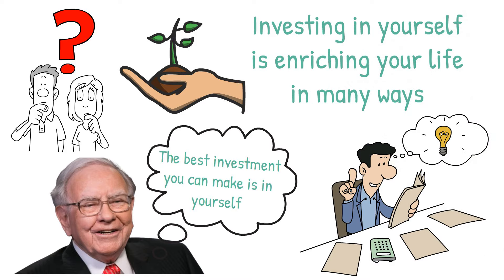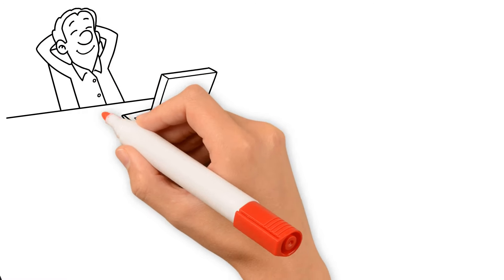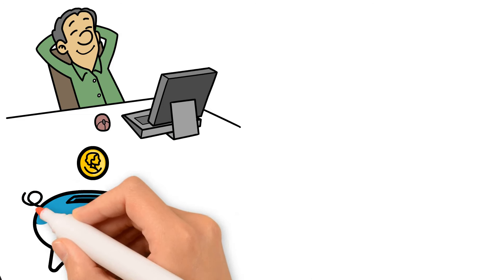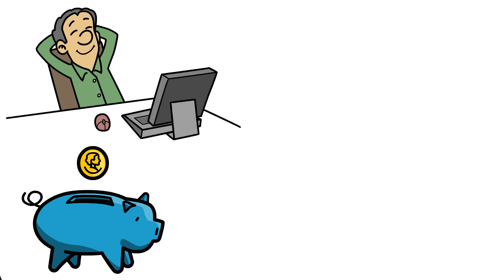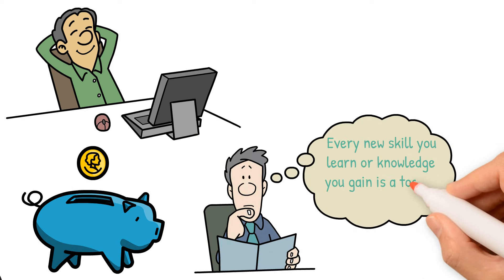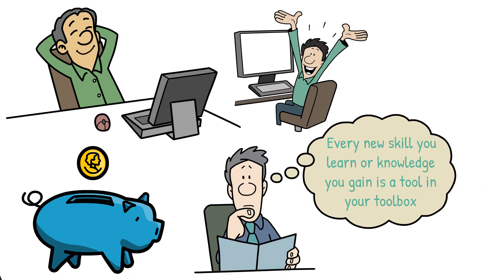Investing in yourself is enriching your life in many ways. When you learn new things, you not only open doors to better job opportunities, but you also become more self-reliant. This means you can save money by doing things yourself instead of paying others. Think of it like this. Every new skill you learn or knowledge you gain is a tool in your toolbox. The more tools you have, the less you need to rely on others for help. That's smart spending and smart living.